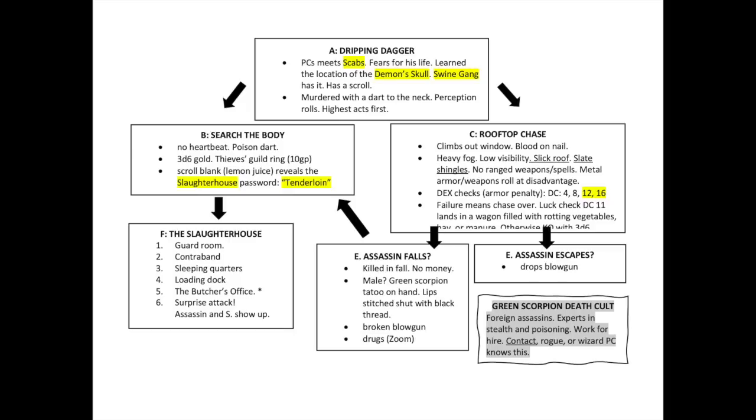A good flowchart is an indispensable tool for any game master, with any game system, for any level of characters. It provides a visual way for the game master to see all the important features at a glance, know where the player characters can go, and it has all the clues and bullet points so you don't miss or overlook any important information. Even if you're running a professionally produced module from Wizards of the Coast, you want to make your own flowchart so you always know where the characters are going and never have to flip through the book for information.